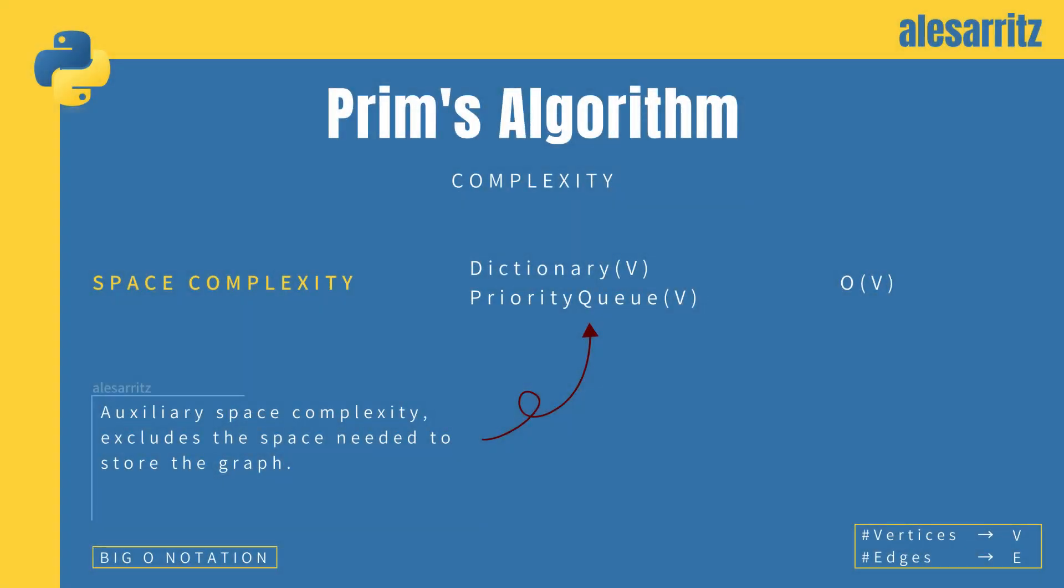Let's now analyze the complexity of the algorithm through big O notation. We'll start with space complexity, excluding from our account the space needed to store the graph. As we saw before, for the development of the algorithm, we need two auxiliary data structures, one dictionary and one priority queue. Both of them have a complexity of O of V. Therefore, the space complexity of Prim's algorithm is O of V.